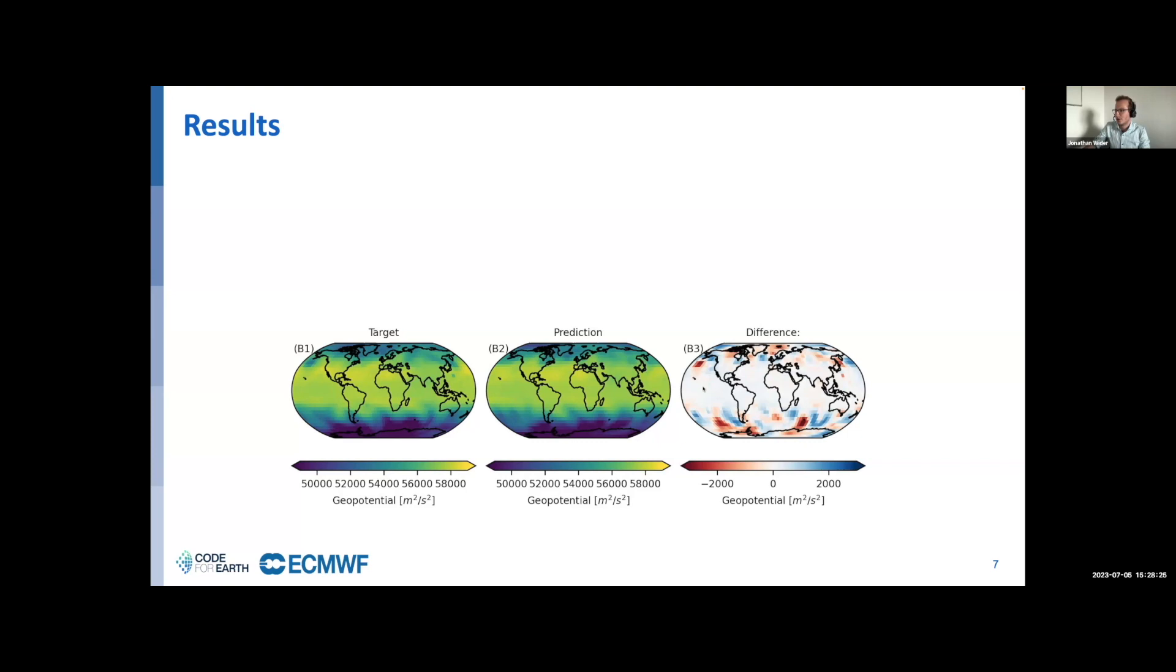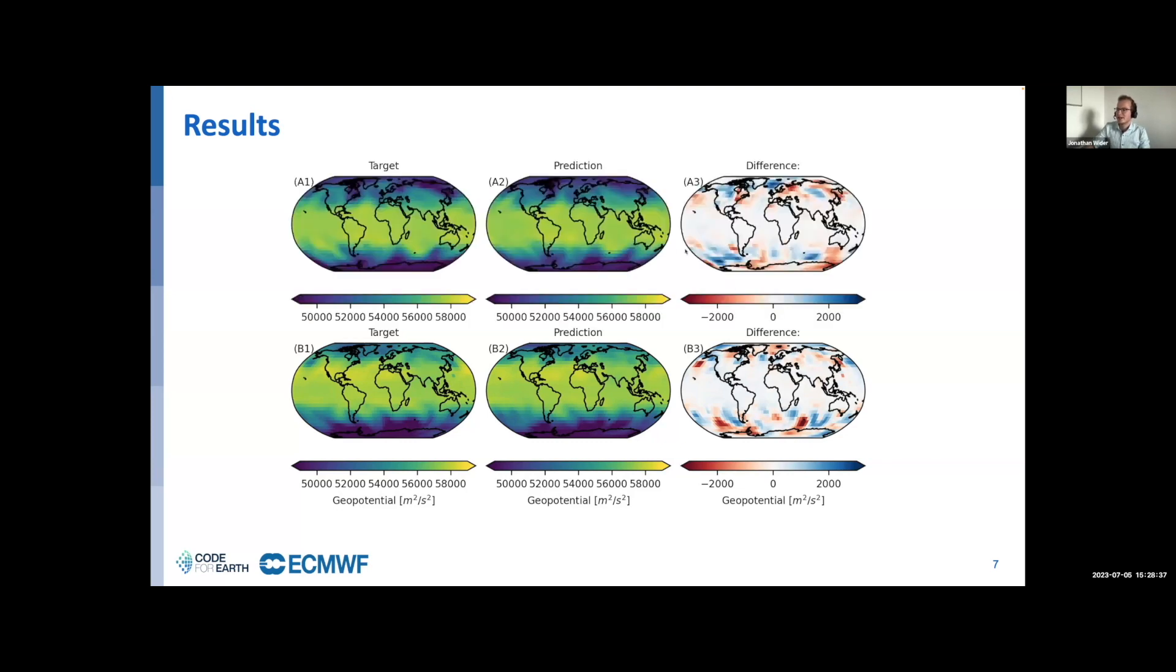Just to show you I didn't cheat by picking one good time step, we have a second time step here. We can see first the patterns are different, so the network doesn't predict the same thing for every time step, which is a good thing. Again, we match the structure of the target well but there are some differences, and we see similar patterns in the differences.